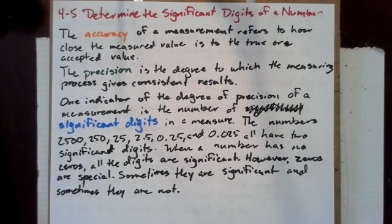One indicator of the degree of precision of a measurement is the number of significant digits in the measure. The numbers 2,500, 250, 25, 2.5, 0.25, and 0.025 all have two significant digits.